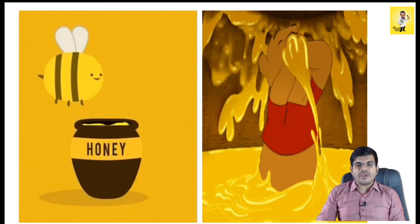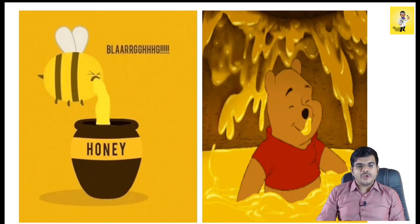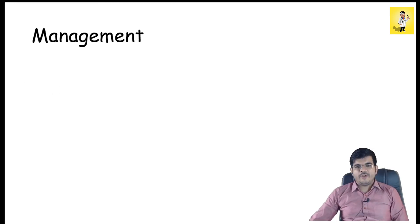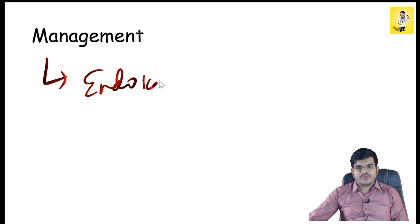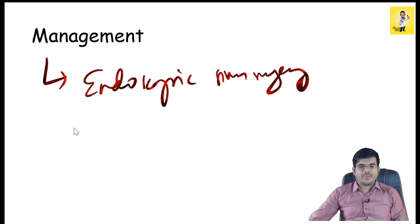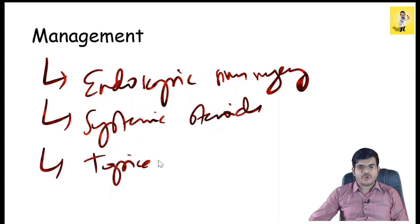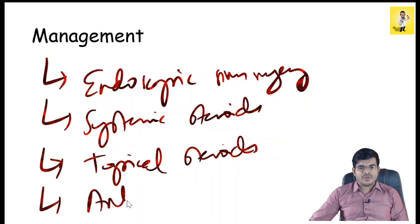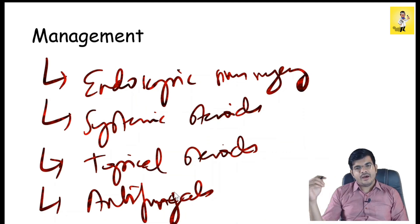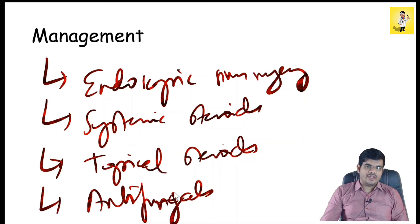Another adjunctive treatment now being used is Manuka honey, available from New Zealand. Management is in the form of endoscopic sinus surgery followed by systemic steroids given in the perioperative and immediate postoperative period, with topical steroids lifelong as nasal spray. Systemic antifungals are given in cases of recalcitrant AFRS and in patients who cannot be given steroids. Manuka honey can also be used as an adjunctive treatment.